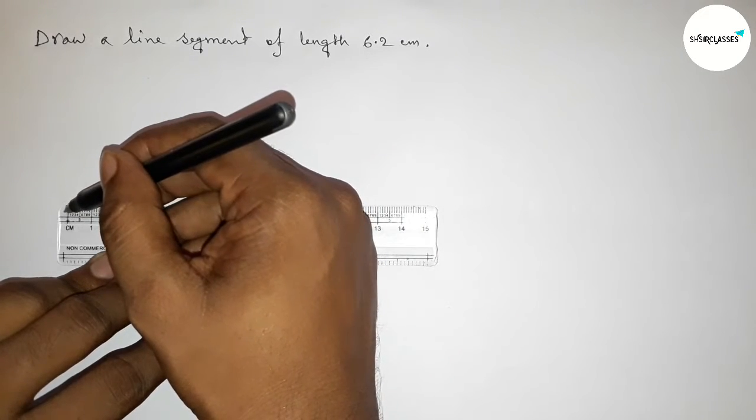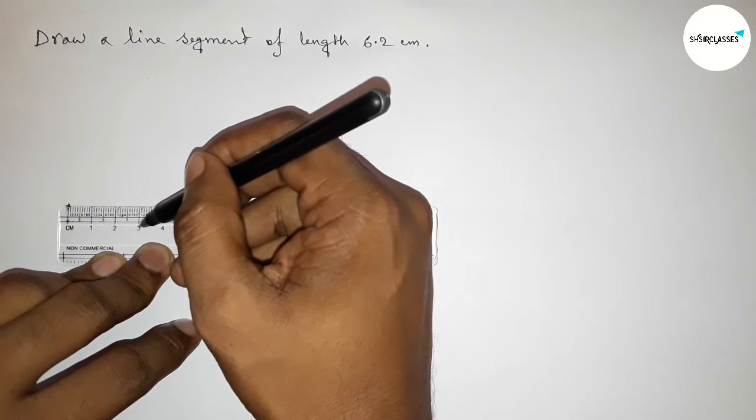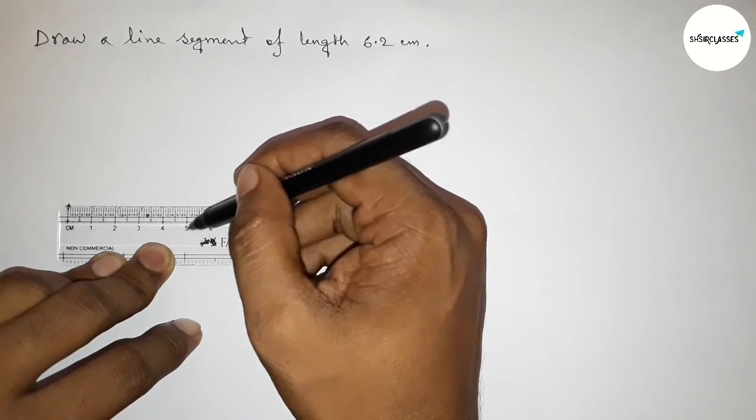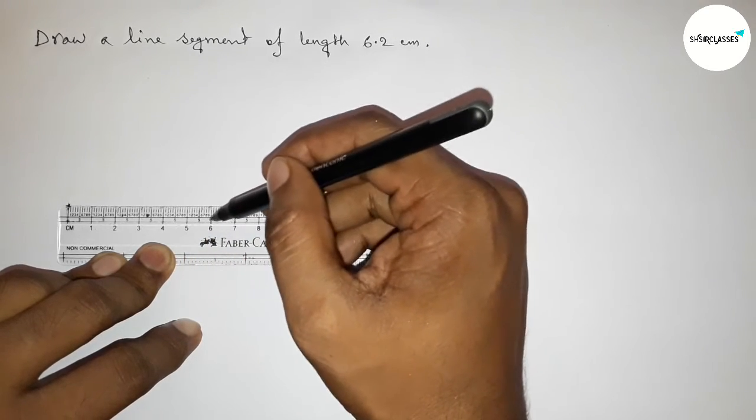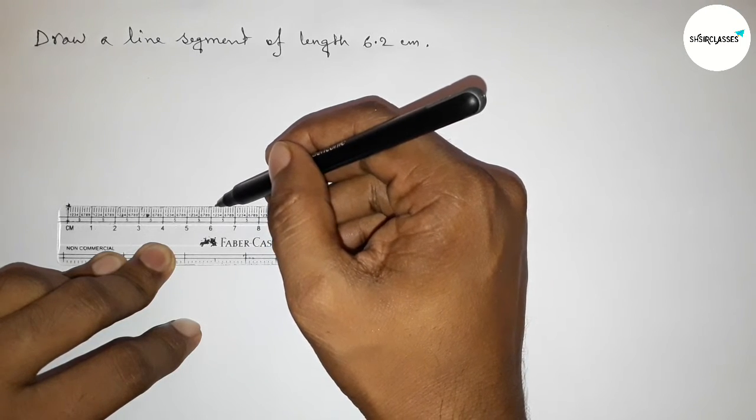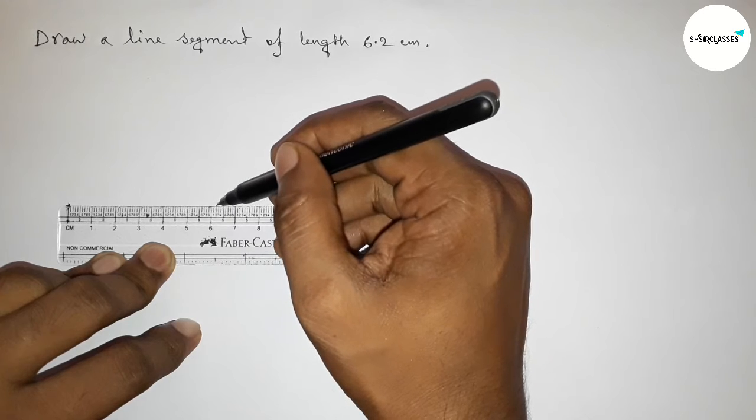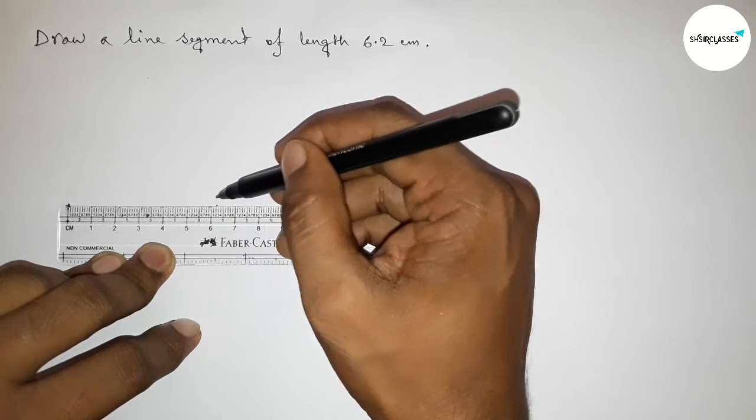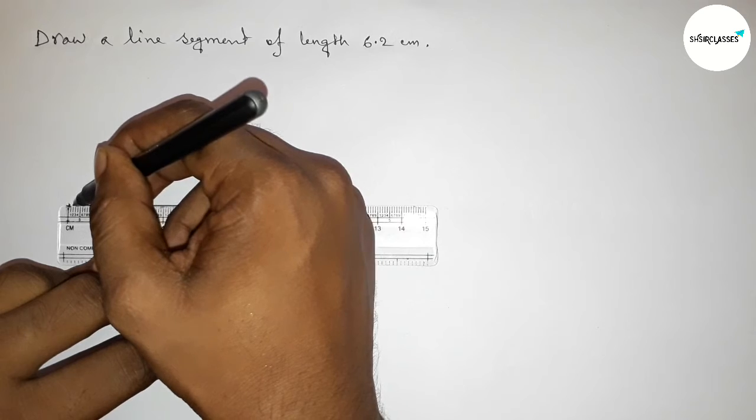And now counting: this is zero, one centimeter, two centimeters, three centimeters, four centimeters, five centimeters, six centimeters, and this is 6.1, and this is two. So this is 6.2 centimeters length. First marking 6.2.